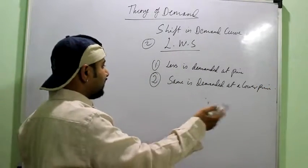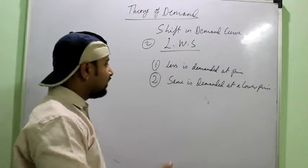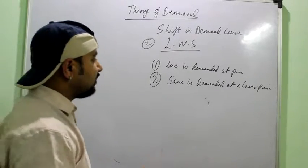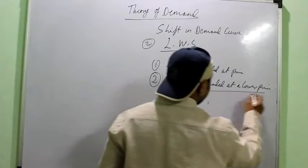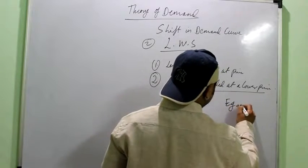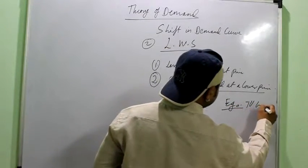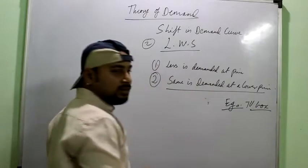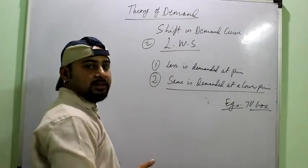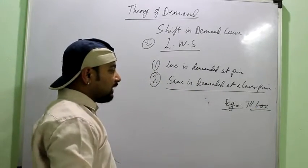Right, if the consumer decreases his demand at the same price, or even if the price falls then also it doesn't buy the commodity. Like again you can remember the example of the television set, the box type. The price has fallen by many folds.